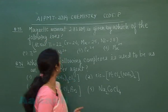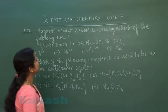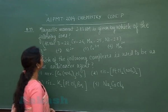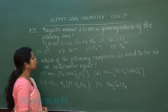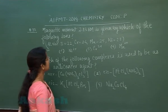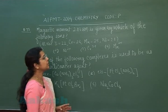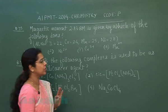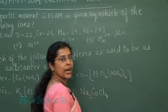Next question is question number 73. Magnetic moment 2.83 Bohr magneton is given by which of the following ions? First option: Ti3+, second option: Ni2+, third option: Cr3+, and fourth option: Mn2+.